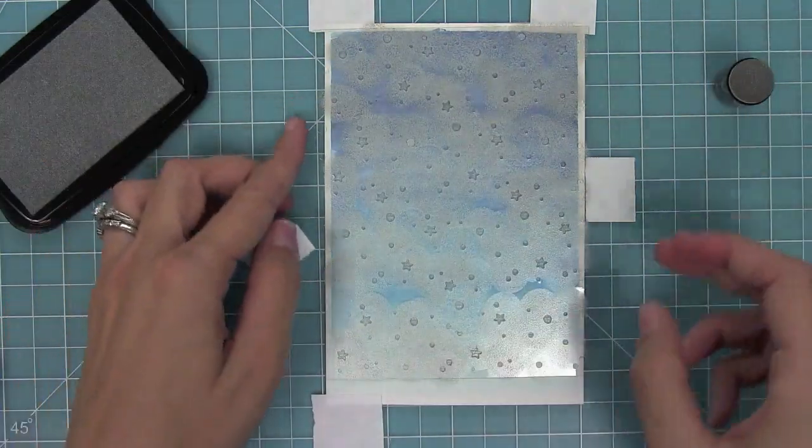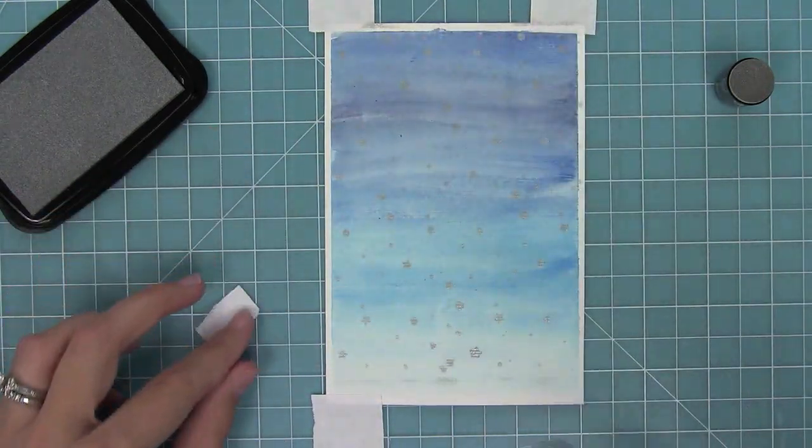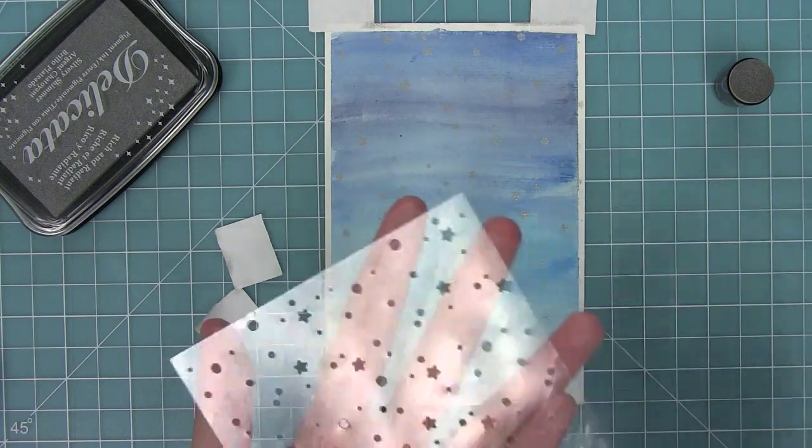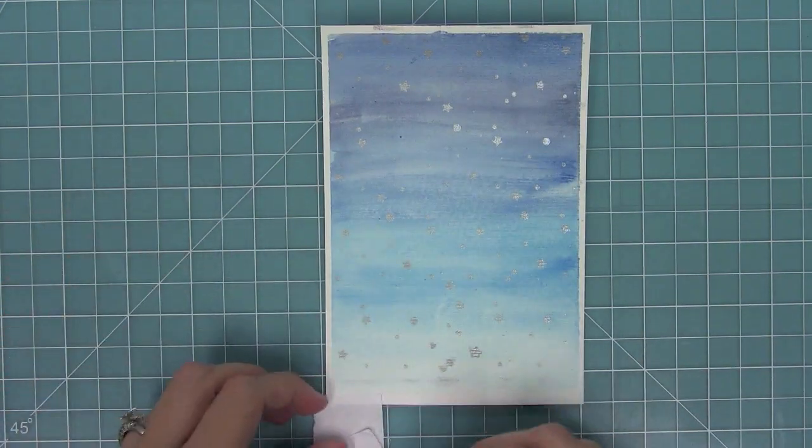Once it's done I can lift up that piece and you're going to see how cool it looks underneath. I'll use a baby wipe to clean that stencil off so I can use it for another project one day. Here is a look at what that looks like.